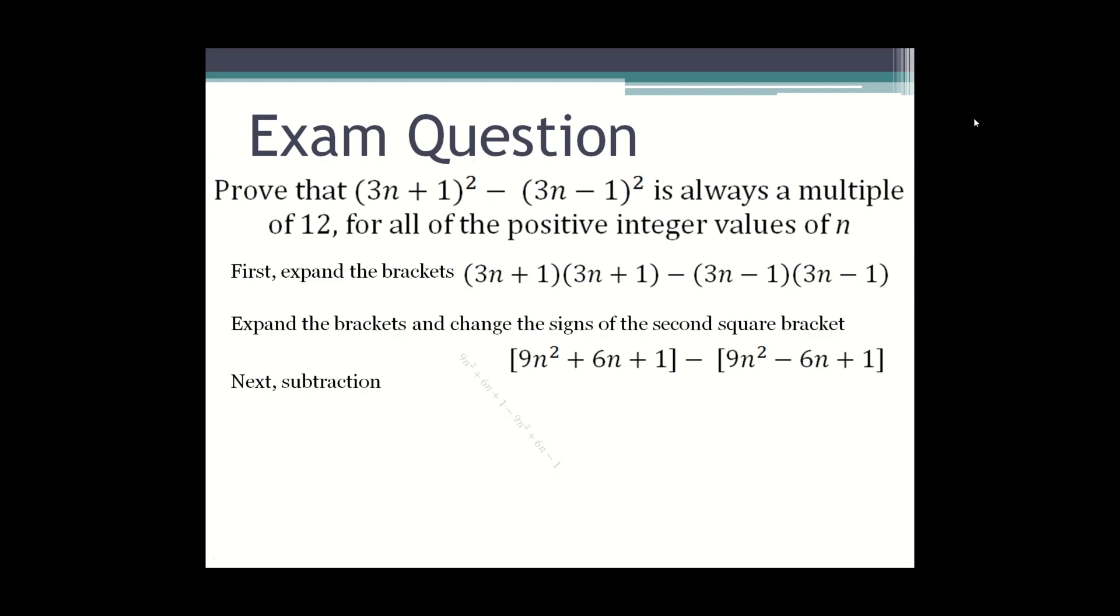Then you do subtraction so after you change the signs it will become 9n² + 6n + 1 - 9n² + 6n - 1. And now equals 12n.